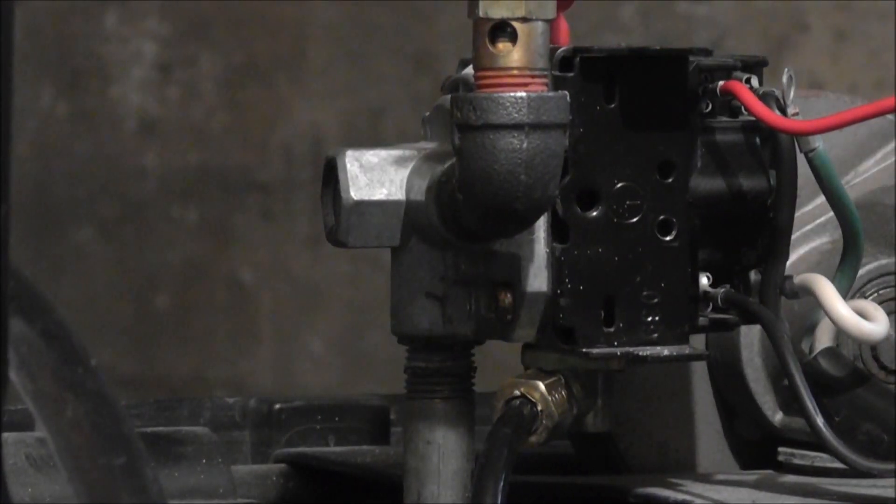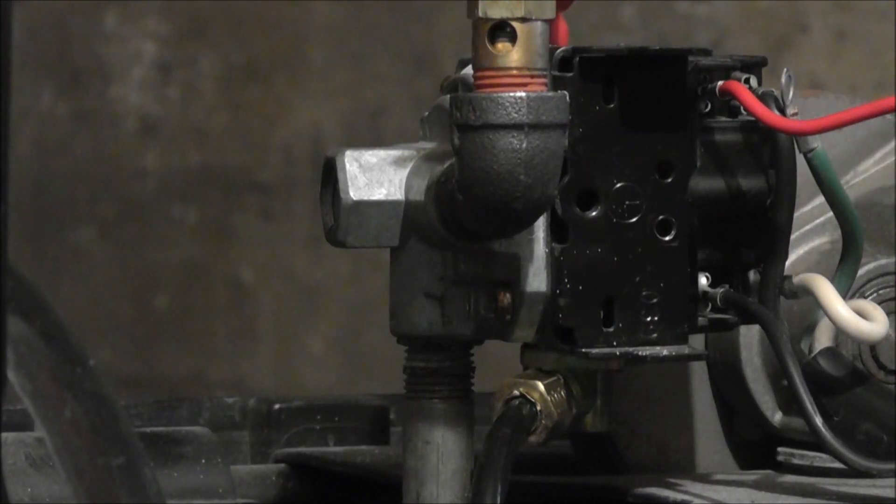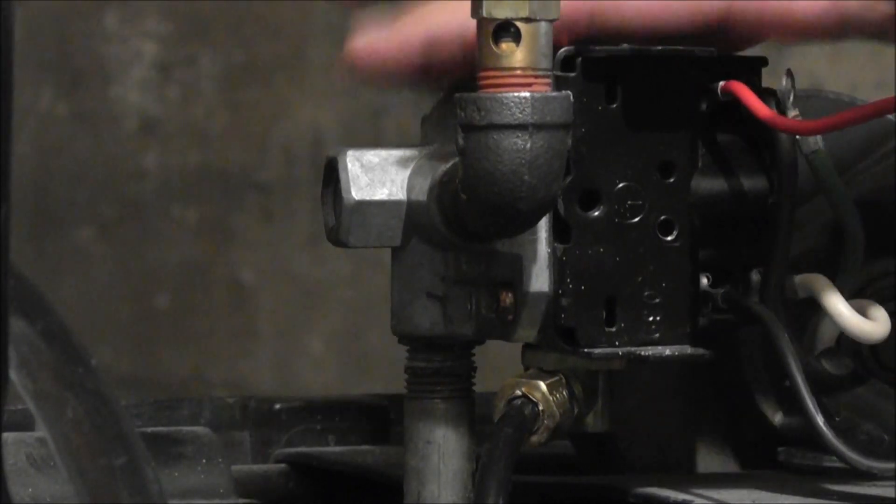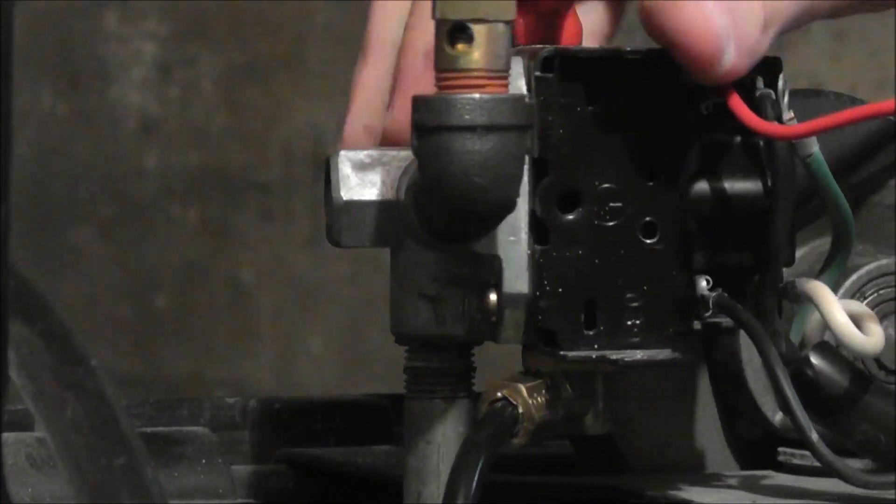And there you have it. Then you want to simply reattach your pressure gauge and all the components that you had taken off, if you have taken it off. So there's a pretty simple explanation of how to wire up a pressure switch.